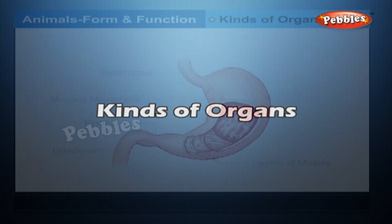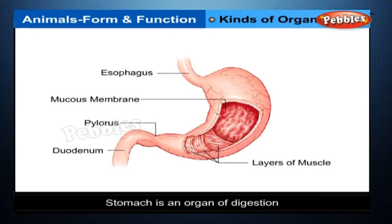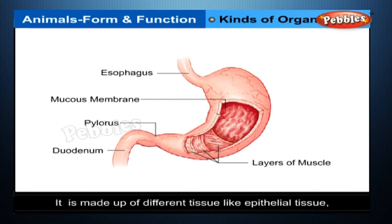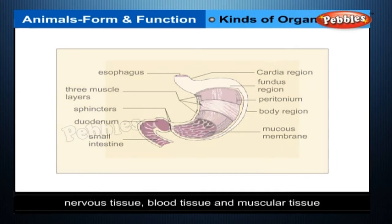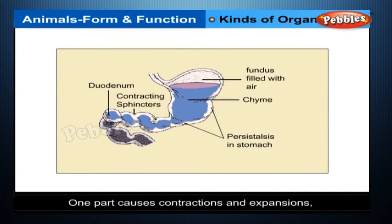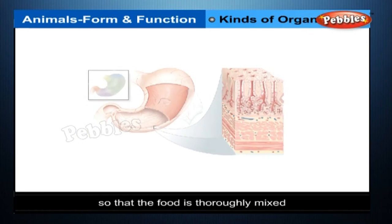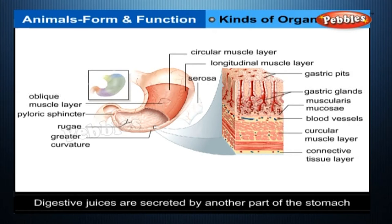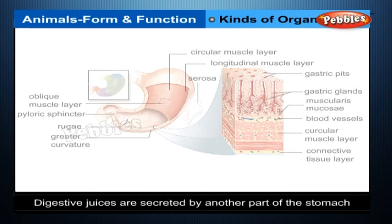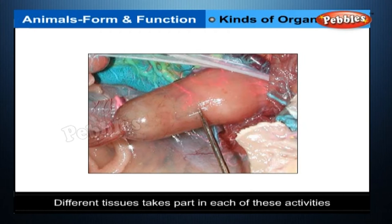The stomach is an organ of digestion made up of different tissues like epithelial tissue, nervous tissue, blood tissue, and muscular tissue. Different parts of the stomach help in digestion: one part causes contractions and expansions so that food is thoroughly mixed — this is called peristalsis. Digestive juices are secreted by another part of the stomach, and different tissues take part in each of these activities.